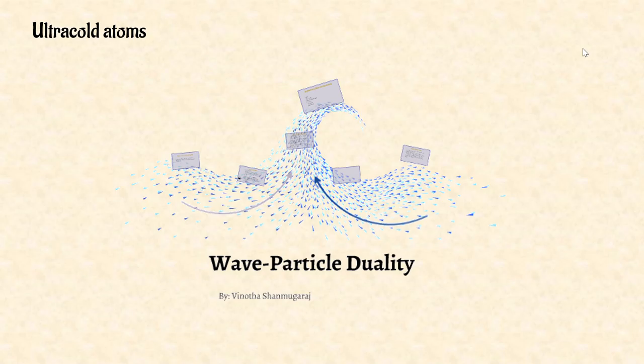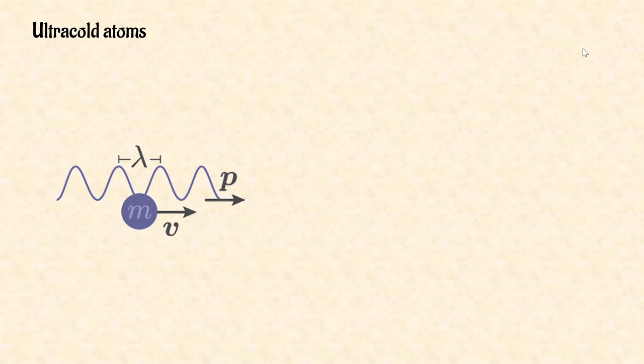The second reason: matter has the features of both wave and particle, and we call that feature wave-particle duality. Atoms are matter, so atoms also have duality. I think you who watched this video already learned that in the macro world, it is difficult to observe that matter has wave property. However, when we use ultra-cold atoms, we can easily observe the wave property because the atoms move more slowly.